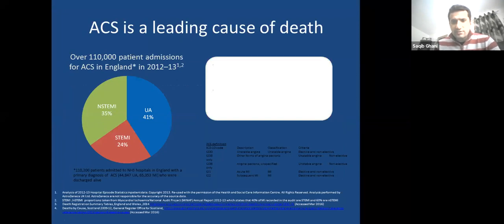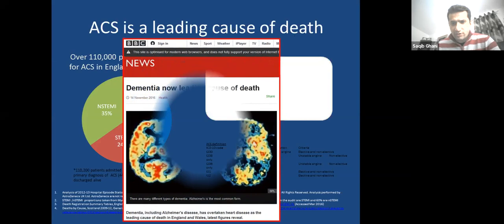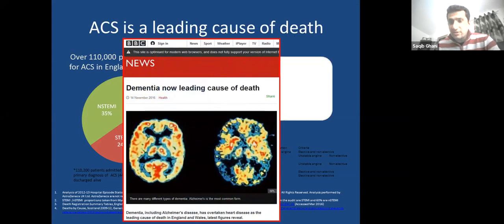ACS remains the leading cause of death in the UK and Western world, though this slide is now outdated — as of two years ago, dementia became the leading cause of death because people are living longer. Ischemic heart disease and coronary disease are now the second biggest cause of death worldwide.